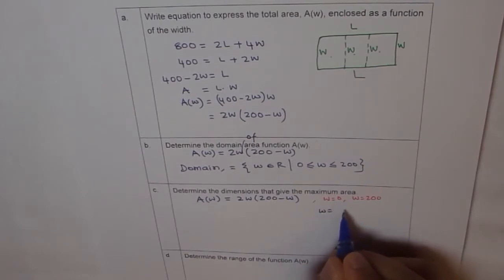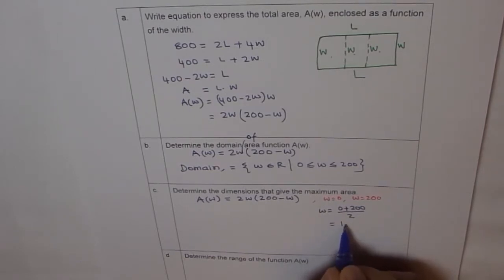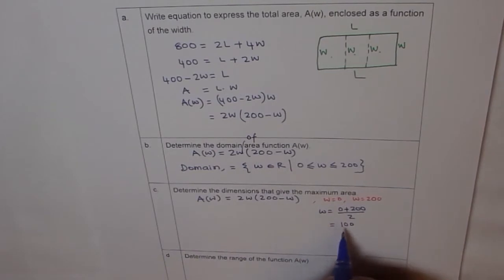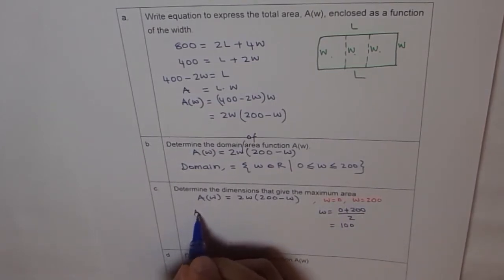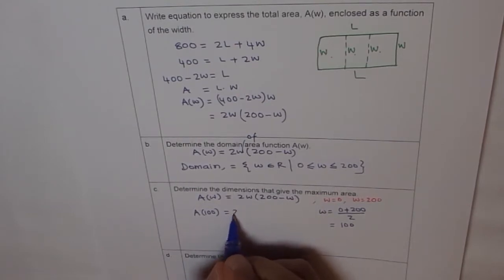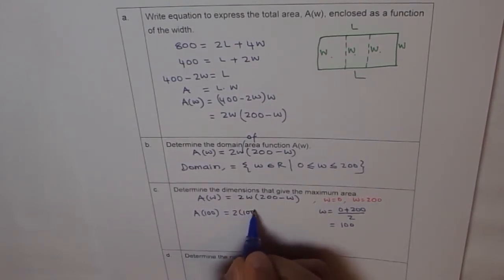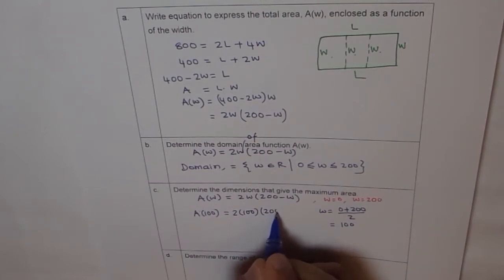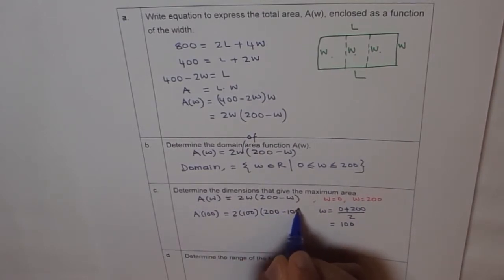So we say axis of symmetry is midway, which is 0 plus 200 divided by 2, which is equal to 100. So it's good to find the value of A at W, 100. So A(100) is how much for us? We will write, replace W with 100. 2 times 100 times 200 minus 100.